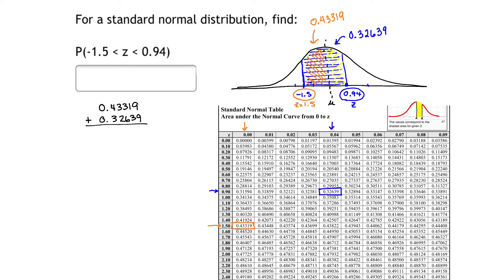When we add those values together, we get 0.75958. The probability that z lies between those two values is 0.75958. And that's our answer.